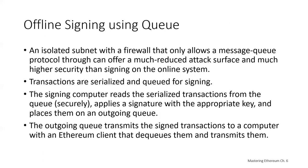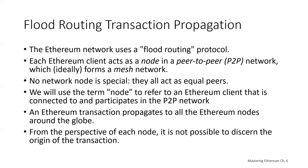For example, an isolated subnet with a firewall that only allows a message queue protocol through can offer a much reduced attack surface compared to signing on an online system. Many companies use a protocol such as ZeroMQ for this purpose. Transactions are serialized and queued for signing; the queuing protocol transmits the serialized message to the signing computer, which reads the transaction, applies a signature with the appropriate key, places it on an outgoing queue, and then a computer with an Ethereum client dequeues and transmits the signed transactions to the Ethereum network.